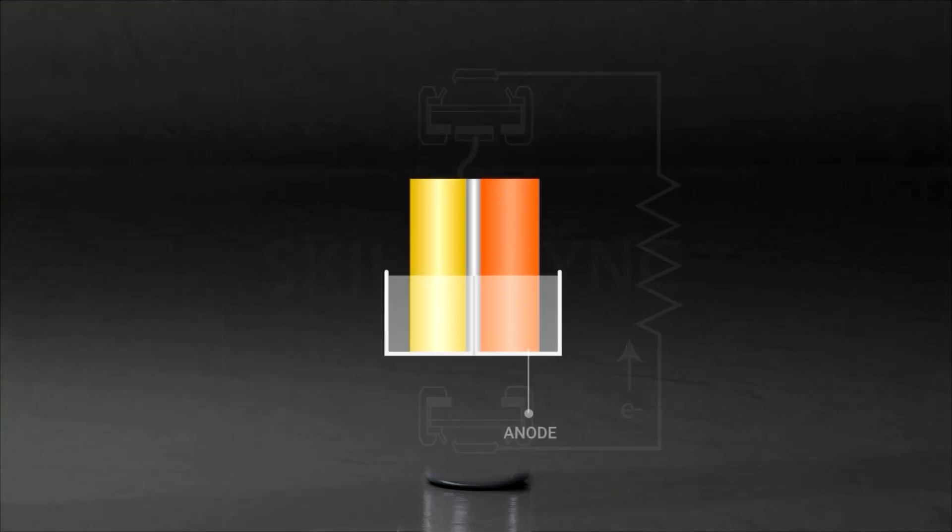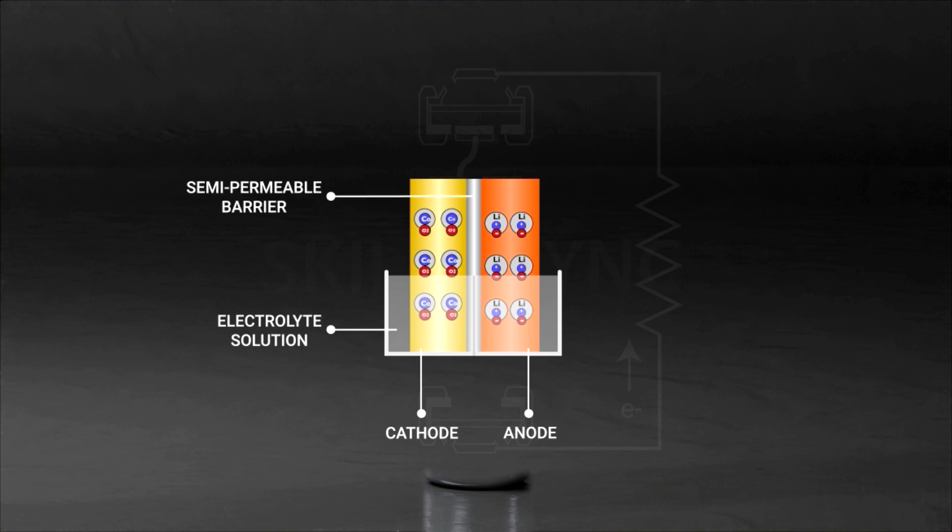This battery has an anode made of lithium and a cathode made of cobalt in its oxide state. The lithium in the anode is held in a stable state between the layers of carbon in the form of lithium carbide.